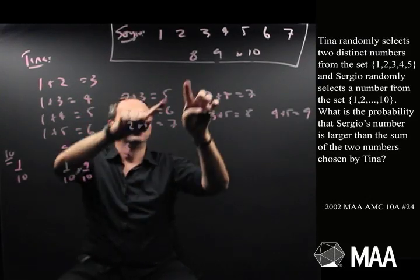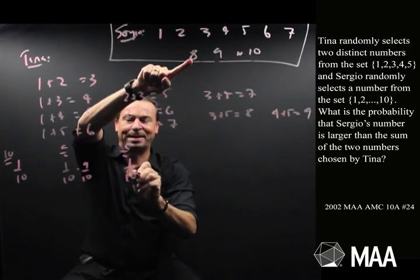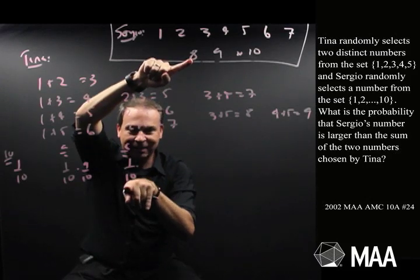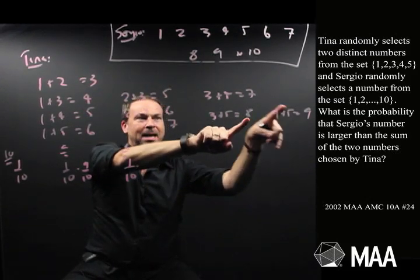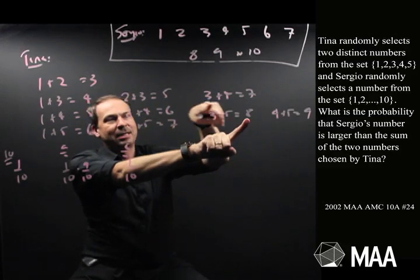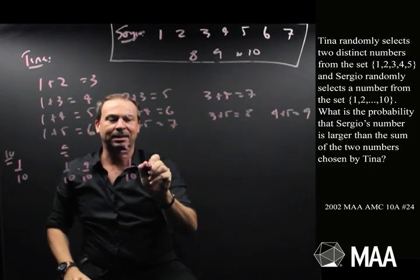If he gets an 8, one-tenth of the time, Sergio gets an 8. And within those one-tenths of the time, he will win when Tina gets one of these sums, which is 8 out of 10 of them, he wins eight-tenths of the time.